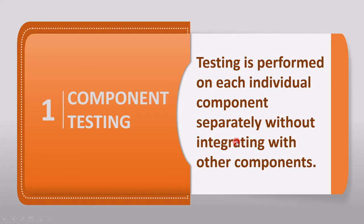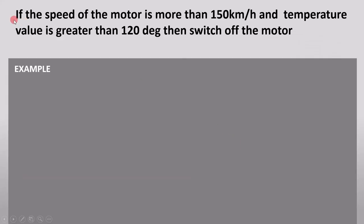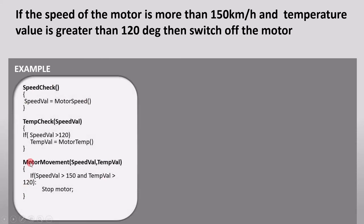Let's use an example to understand this definition. The requirement given by the customer is: if the speed of the motor is more than 150 km per hour and the temperature value is greater than 120 degrees, then switch off the motor. For this requirement, the developer writes code divided into three functions: the first checks the speed of the motor, the second checks the temperature value, and the third controls the motor — whether it should stop or keep running.